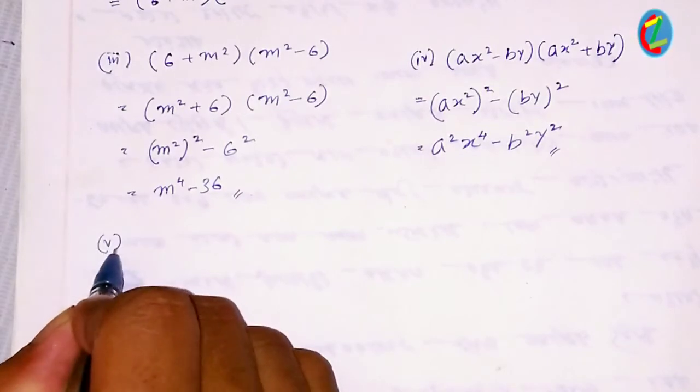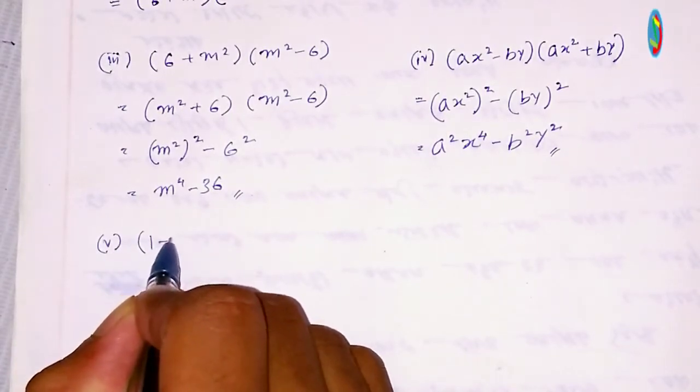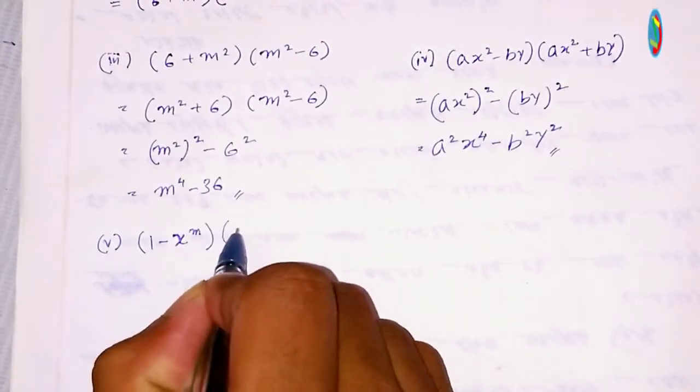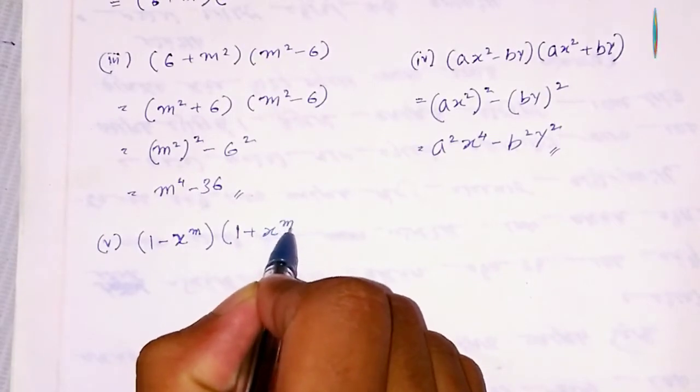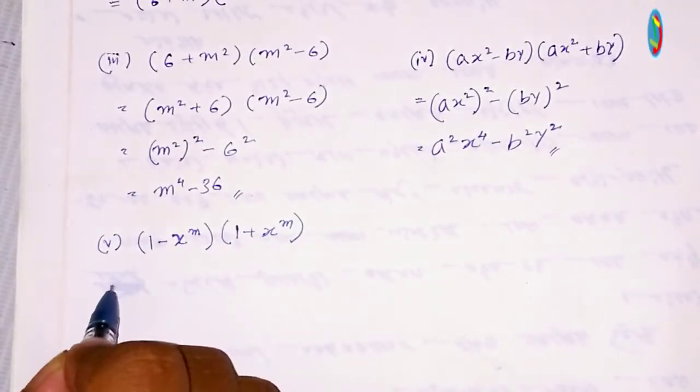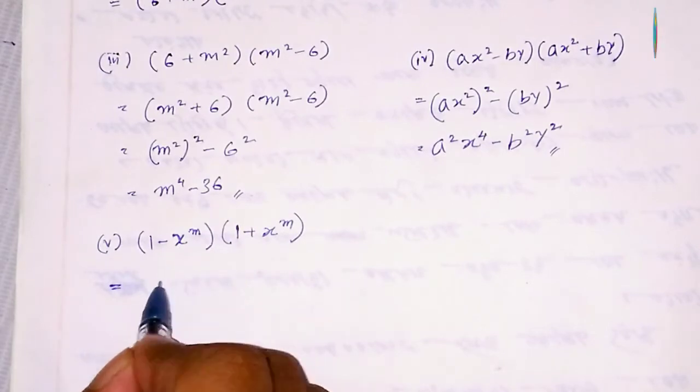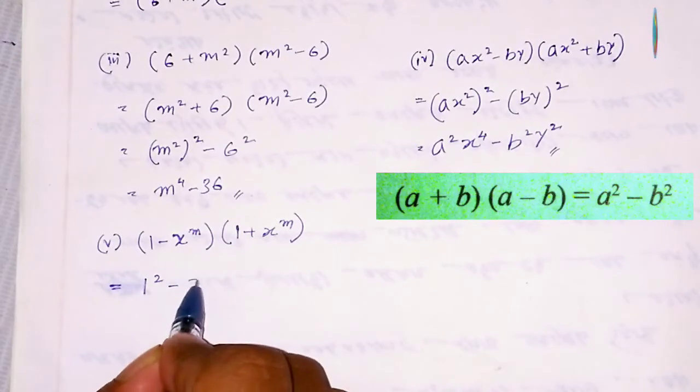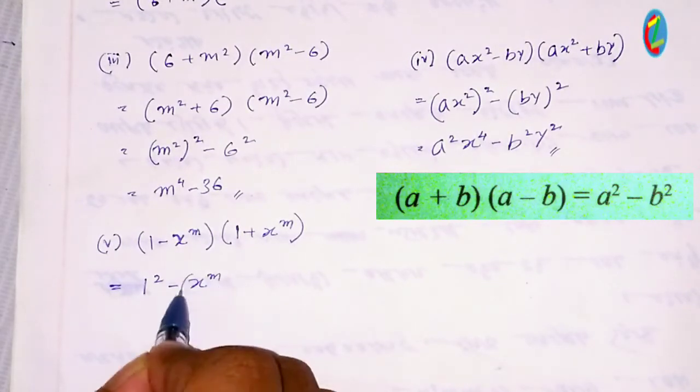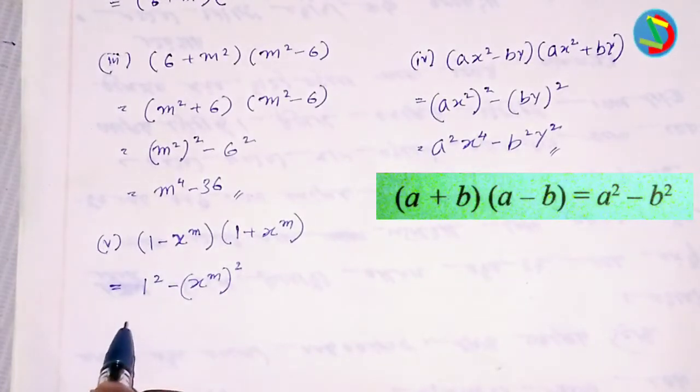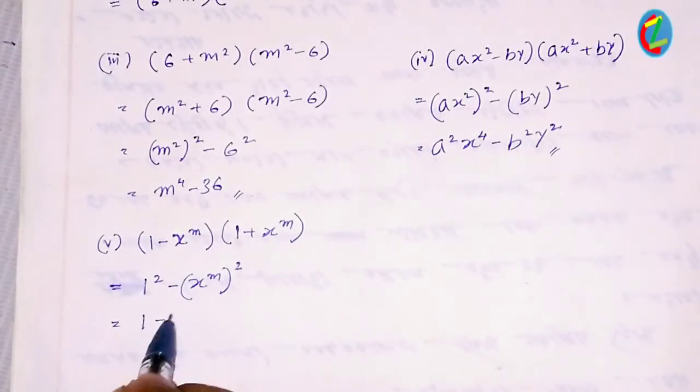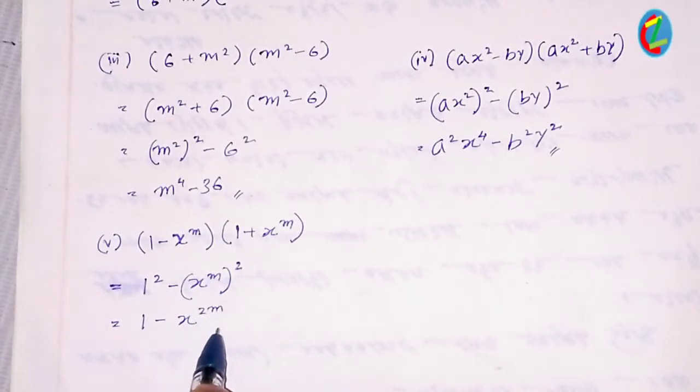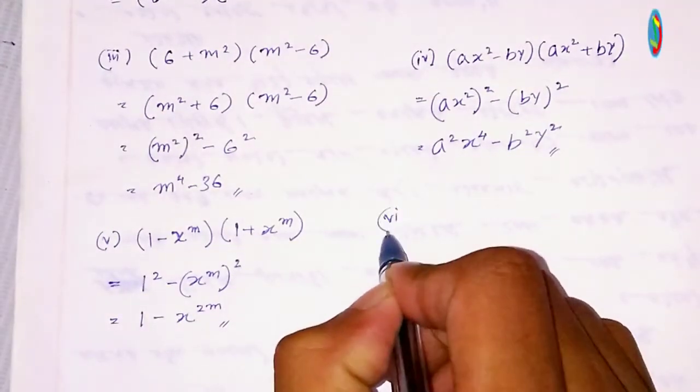Next we have (1 - x²m)(1 + x²m). This equals 1² minus (x²m)². Here a² is 1, and b² is x²m. So 1² minus (x²m)² gives us 1 minus x⁴m². That's the answer.